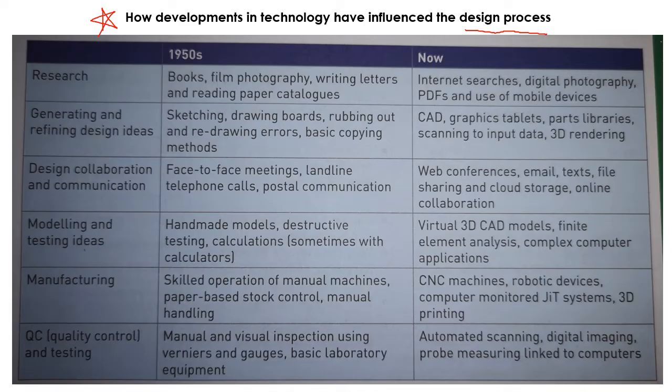This is the only slide I've got - sorry the quality is not the best. It looks at a range of different things to do with the design process: all the way from research, sketching, communicating ideas, prototyping, manufacturing and quality control, all the way through to how it was done in the 1950s.